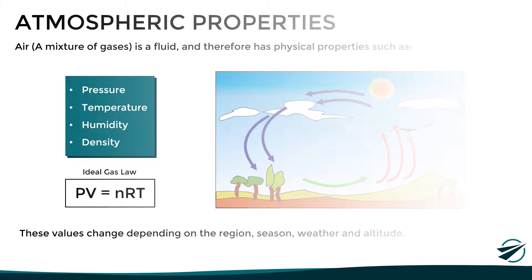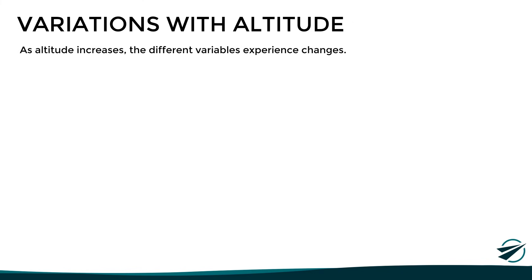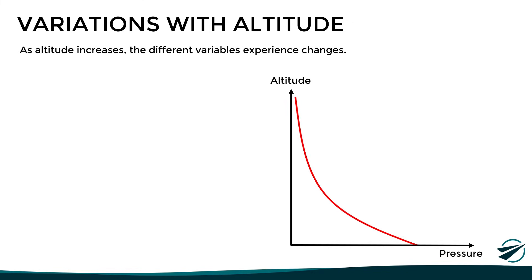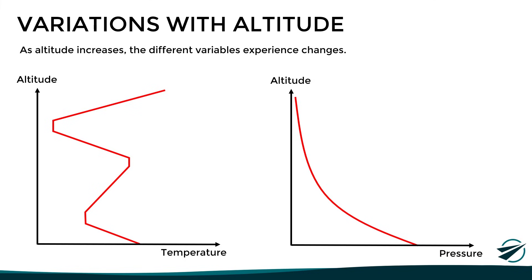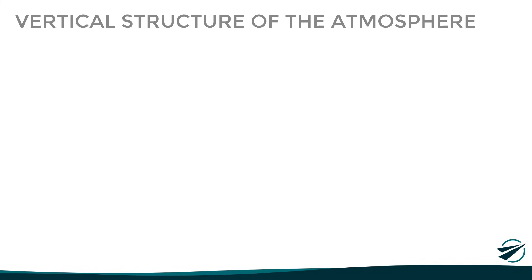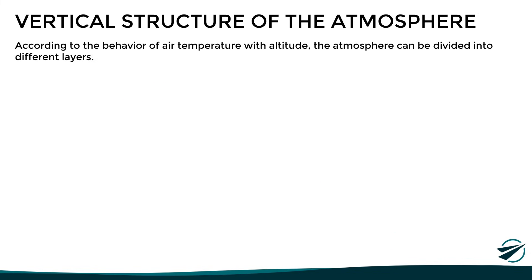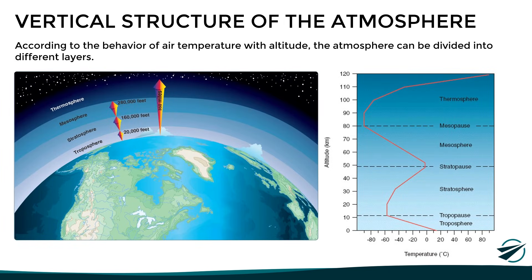The most significant changes in these variables occur with altitude. As altitude increases, the pressure decreases at a higher and higher rate, as we can see in the graph on the right. However, unlike pressure, temperature has a rather curious behavior, as we can see in the graph on the left, since depending on the altitude range analyzed, temperature can increase or decrease at different rates. It is mainly for this reason that, according to the behavior of air temperature with altitude, the atmosphere is divided into different layers, each with different characteristics, which we will talk about in more detail in the following video.